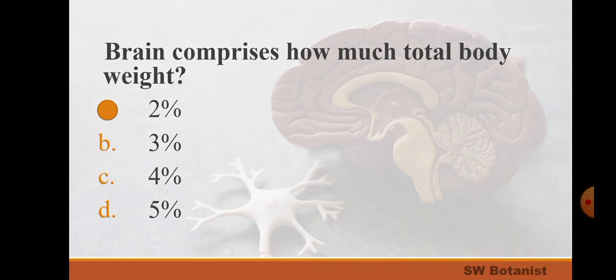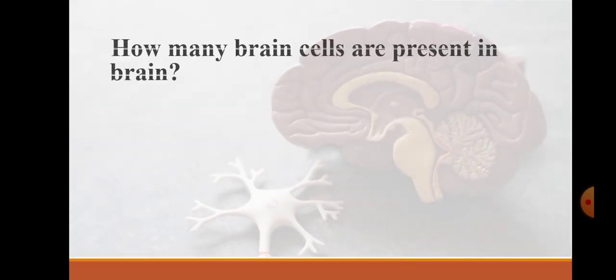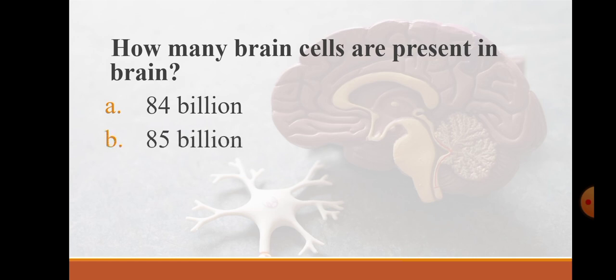How many brain cells are present in brain? 84 billion, 85 billion, 86 billion, 87 billion. Answer is 86 billion. The most common brain cells are neurons and non-neurons cells.